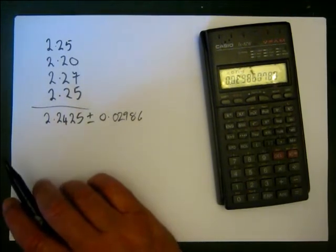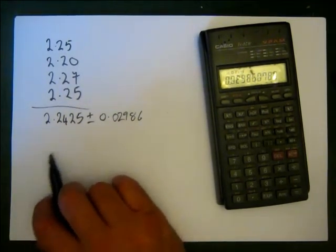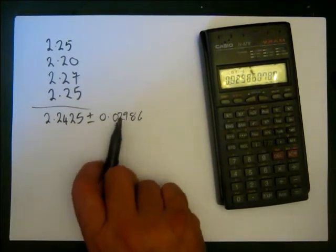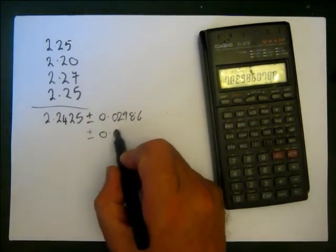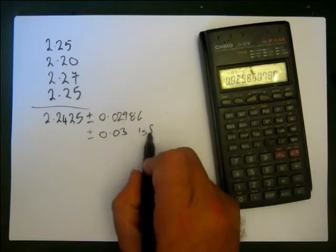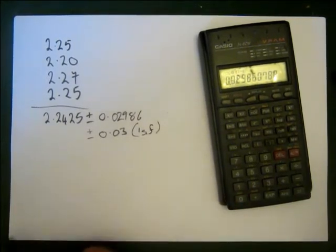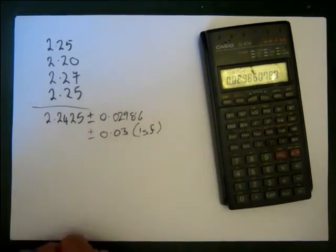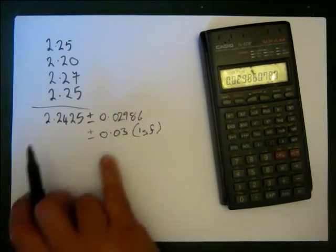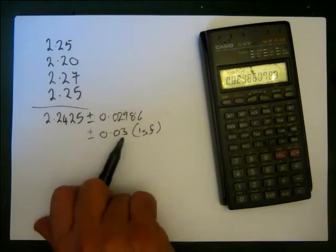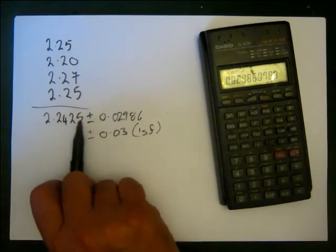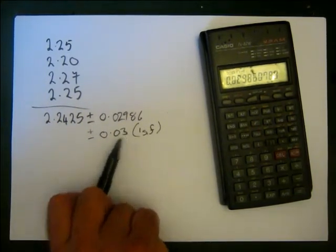Now when we actually write the standard deviation, what we do is we always give the standard deviation to one significant figure. That's the convention. The errors or uncertainties are given to one significant figure. That's going to be 0.03. But you'll notice that this is at the second decimal point. There's more decimal points here than there are here.